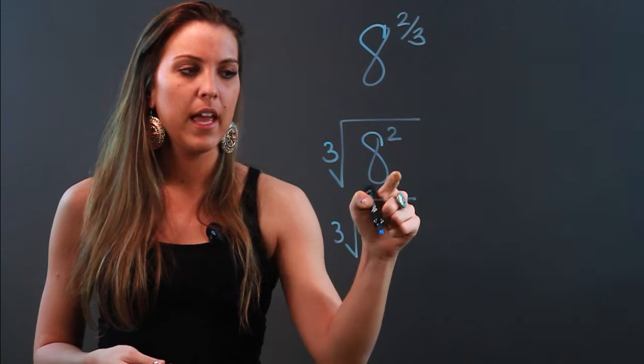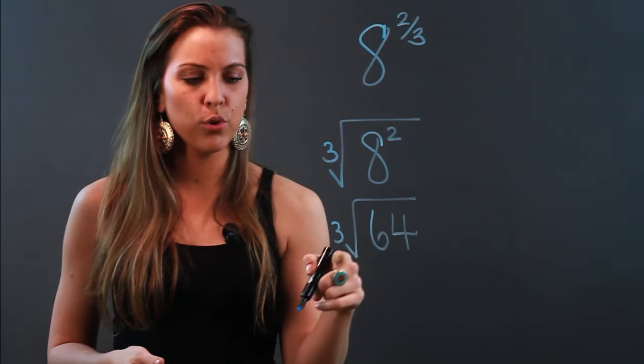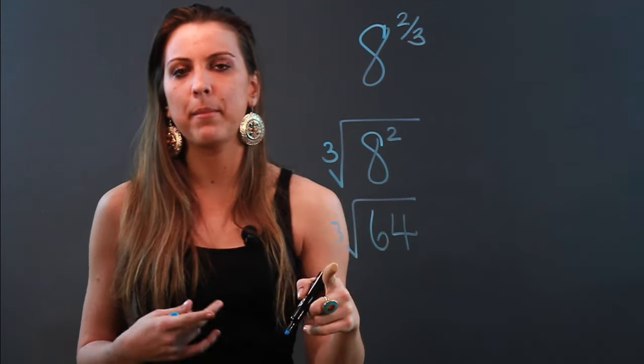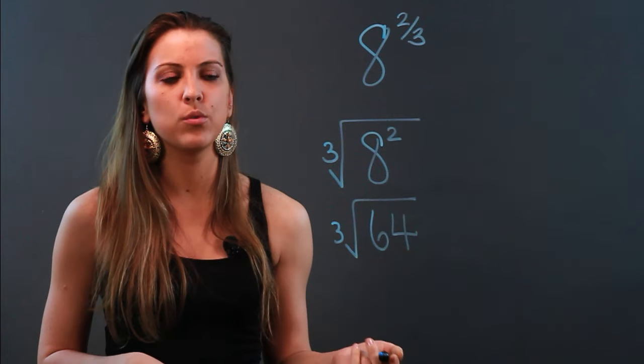I have the cube root of 8 squared, which is 64. So cube root means that I'm looking for a number that I multiply by itself three times, as opposed to square root, which is two times.